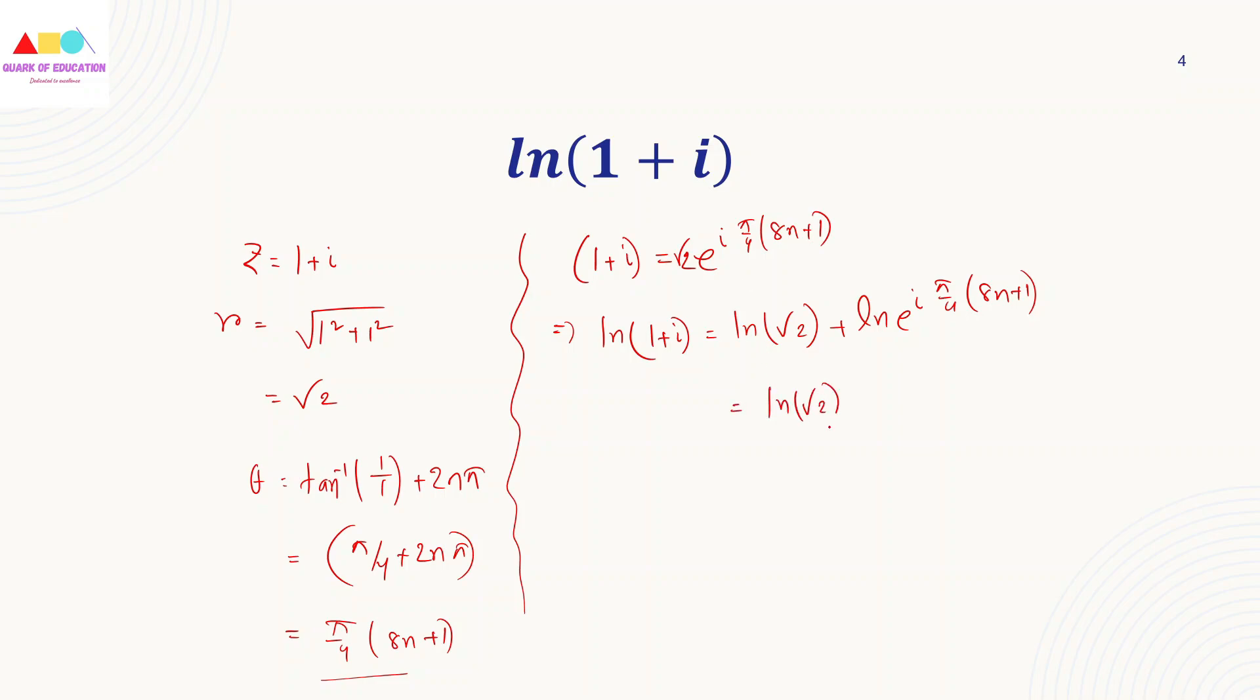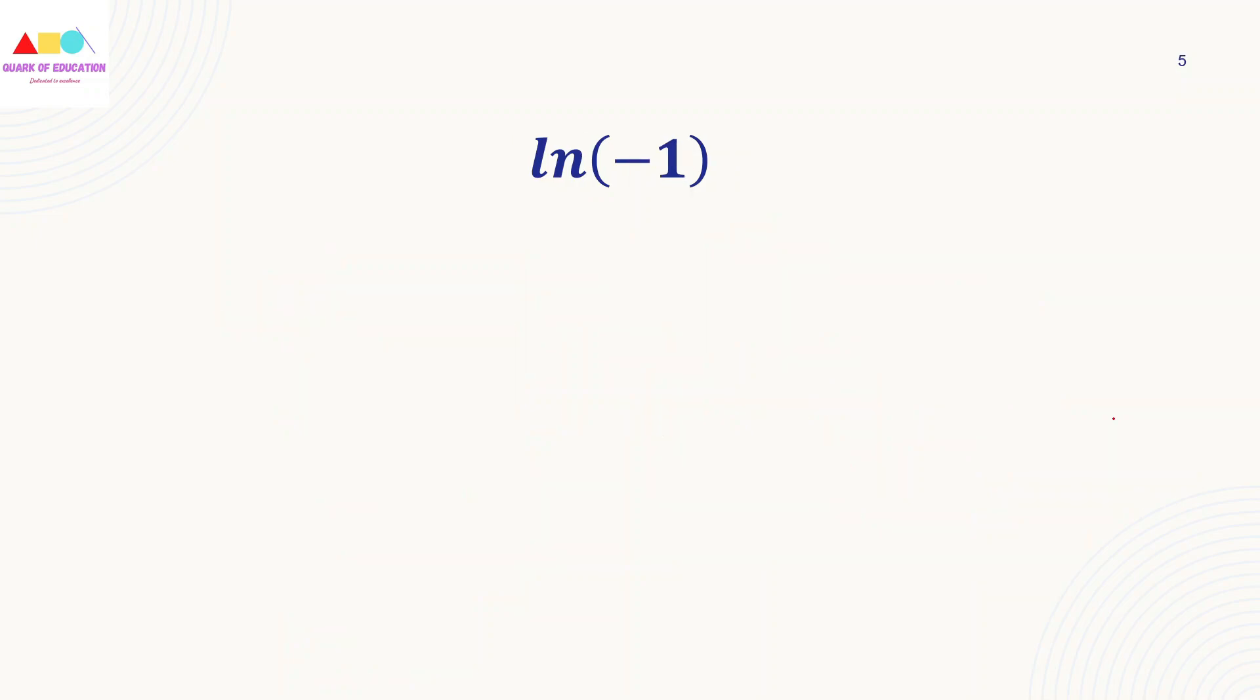This is very simple, this is a formula. We can write the answer as ln root 2 plus i times pi by 4 plus 2n pi. We want to write the complex number natural logarithm in two parts - the real part and the imaginary part.